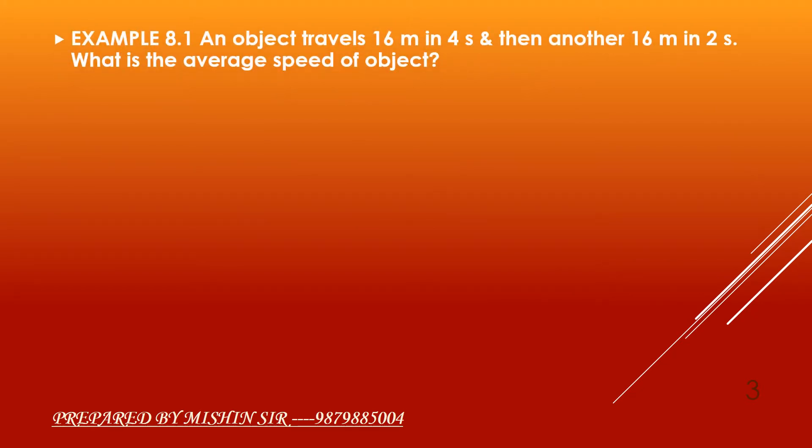Example 8.1: An object travels 16m in 4 seconds and then another 16m in 2 seconds. What is the average speed of object?